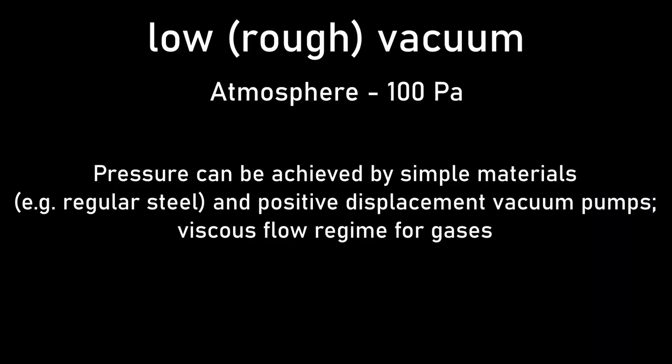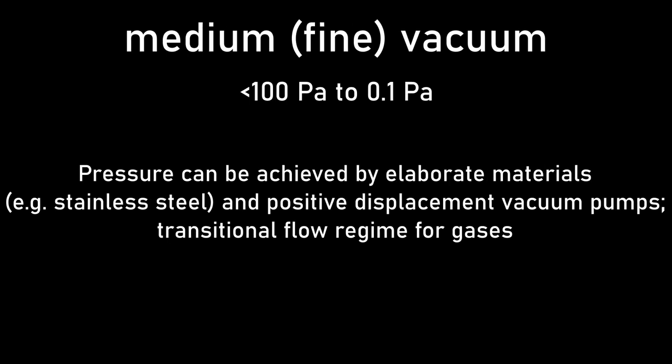Rough vacuum, also called low vacuum, covers the range from atmospheric pressure down to 100 pascals. At this pressure, gases still act like a fluid and exhibit viscous flow. Gases start to transition out of viscous flow in medium or so-called fine vacuum, which covers the range from 100 pascal down to a tenth of a pascal.